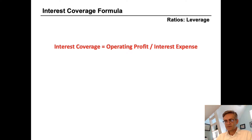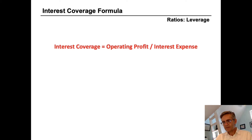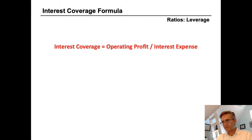Now we're going to look at the interest coverage ratio. The formula for interest coverage is operating profit divided by interest expense. And sometimes this is called times interest earned, because what it's doing is dividing earnings by interest expense to tell you how many times your earnings are above the interest obligation on any debt owed.